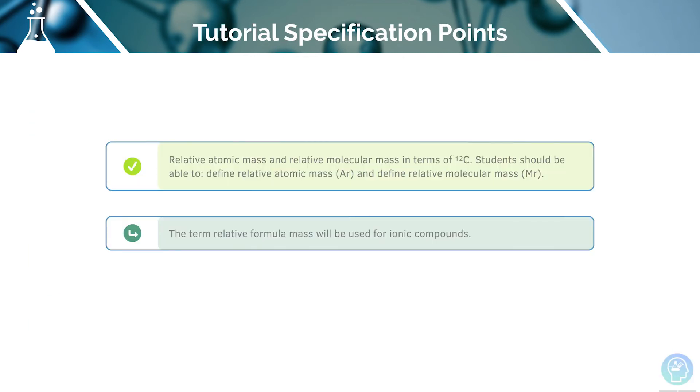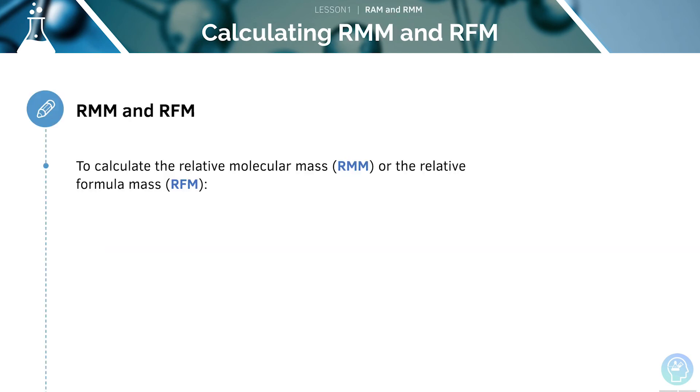Now let's move on to our next specification point, covering the term relative formula mass. We learnt earlier how we can calculate RAM using the relative abundance of isotopes of an element. Now we'll look at the relative molecular mass.